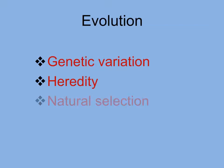Darwin made many observations that led to his realization of the process of evolution. First, all populations contain variation on a genetic level. Second, offspring inherit characteristics from their parents. And third, organisms with the most appropriate characteristics for their environment will leave the most offspring. This is the mechanism of natural selection.